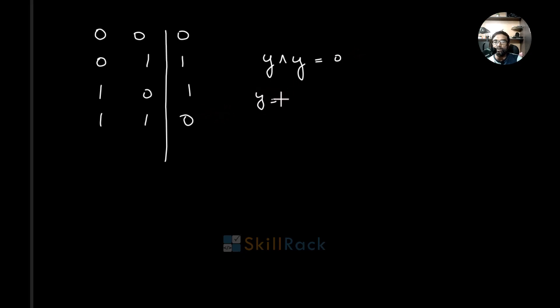For example, let us say Y is equal to 5. The binary representation is 1 0 1. So when you do 1 0 1 XOR 1 0 1 you get 0 0 0 which is nothing but 0 in decimal.